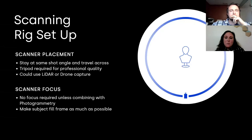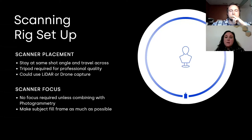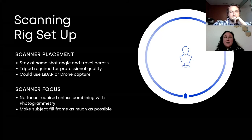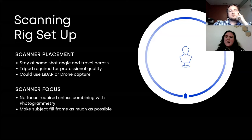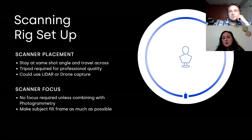Scanners are more of a continuous role rather than individual images. The goal is to really maintain the integrity and level around, so you want to stay at the same angle and travel across the object evenly. A tripod is required to have that stability and professional quality. There are lots of ways that scanners are used — LiDAR, drones, and we'll talk about RGBD. There is no focus required for a scanner specifically; they typically have all those things intrinsically set up. You want to fill the frame as much as possible with the subject. One common thing we are seeing is that combination of scanner data with photogrammetry, and that's a really great way to supercharge your data sets.